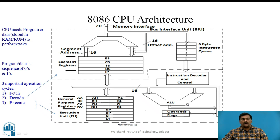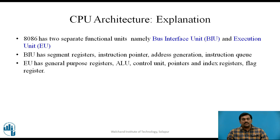The Execution Unit has an Arithmetic and Logical Unit (ALU) which performs arithmetic or logical operations. The EU also has a flag register to indicate the status of the current operation. To summarize: BIU has segment registers, instruction pointer, address generation, and instruction queue; whereas EU has general purpose registers, arithmetic logical unit, control unit, pointers and index registers, and a flag register.